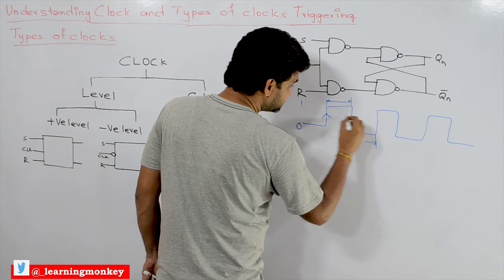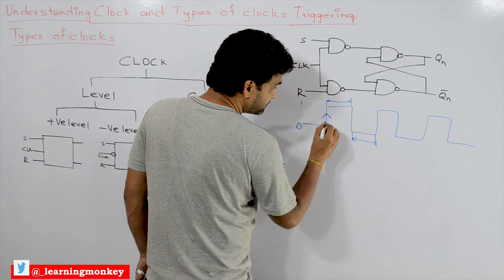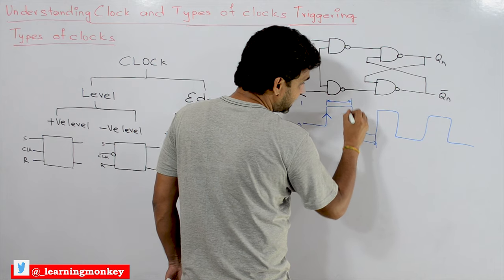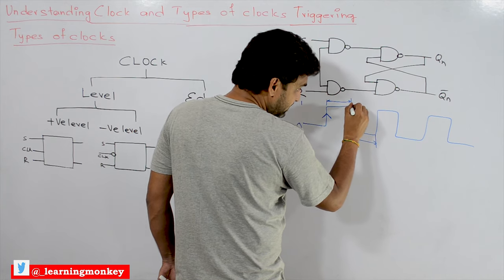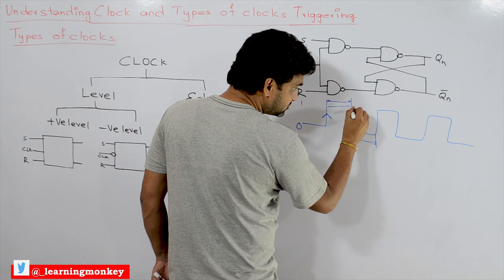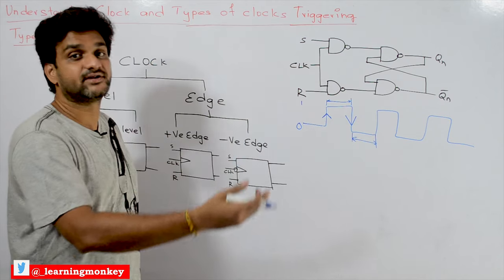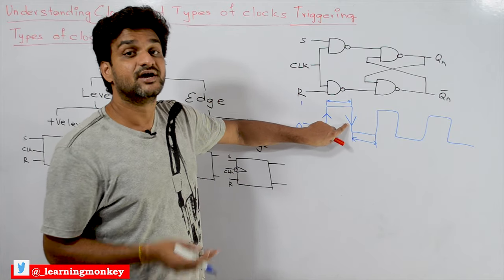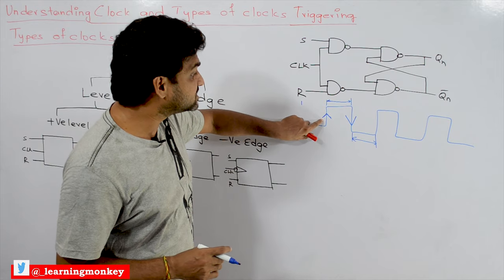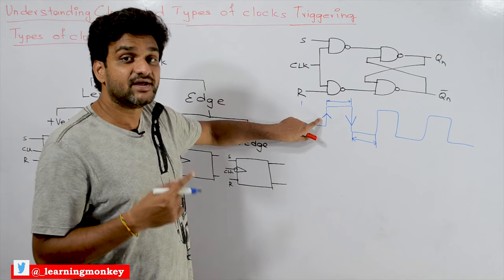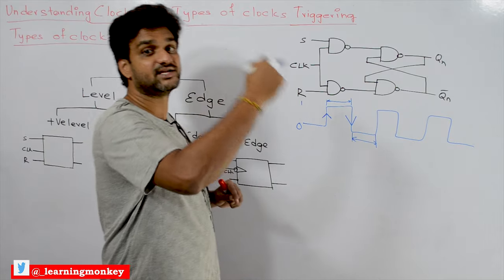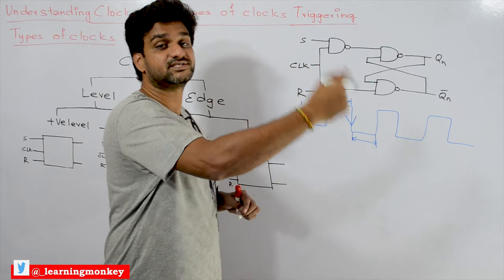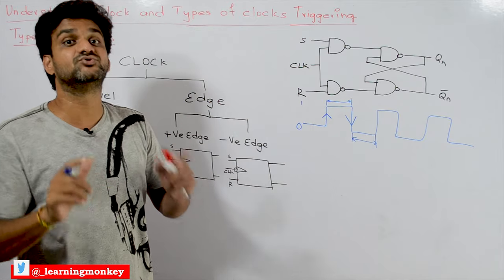This is what we call positive edge triggering because we are moving from 0 to 1. Negative edge triggering means as and when we are moving from 1 to 0 — at that edge the clock will get triggered. So if the clocking mechanism triggers from 1 to 0, it is called negative edge triggering. If the transition is from 0 to 1, that edge transition is called positive edge triggering.